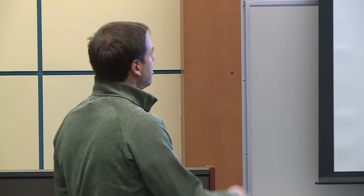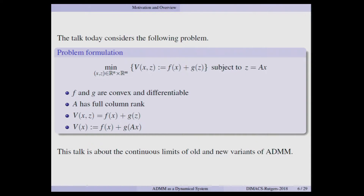We'll assume that the matrix A has full column rank. At various points, since this is the definition of the objective function, I'll be assuming that z is feasible — so z equals Ax — and I'll just substitute and call it v(x). So sometimes it's v(x,z); if z is feasible, I'll do the substitution and call it v(x). This will be the problem we look at for the talk.